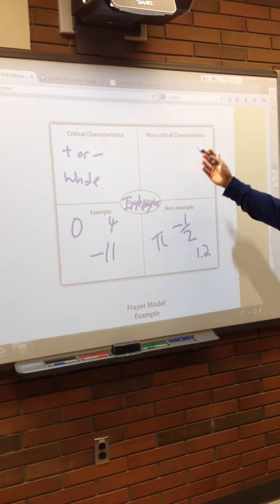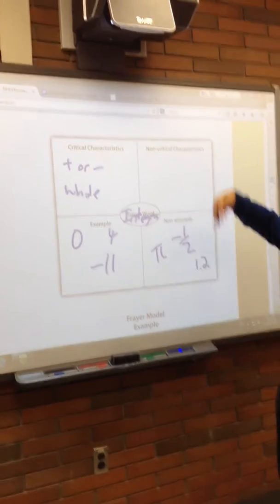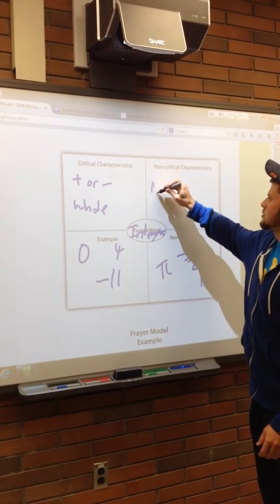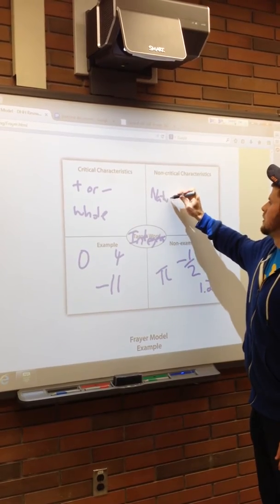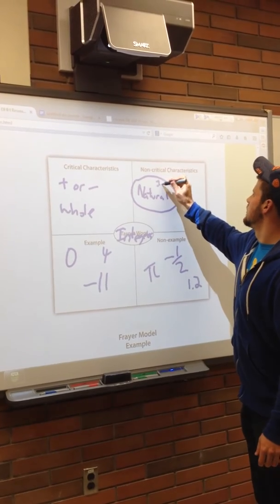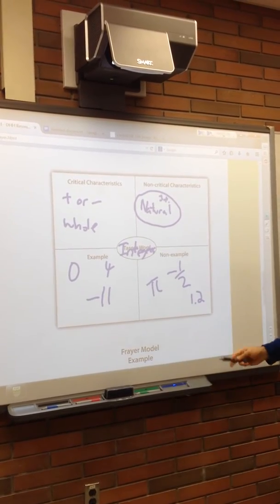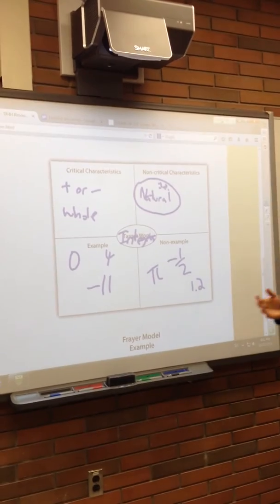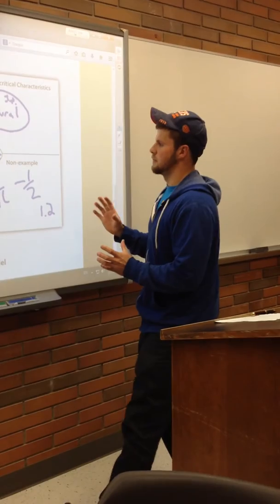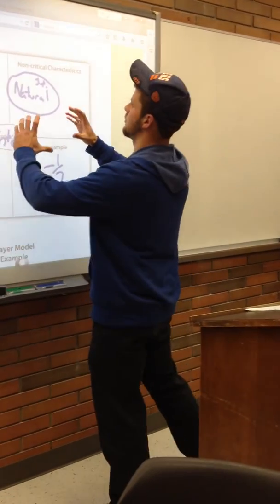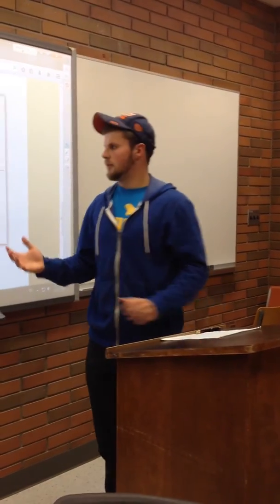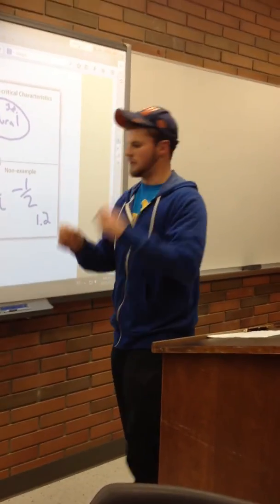And then they consider what are non-critical characteristics — things that we may know about them, but things that aren't essential to know. So the student may say, well, natural numbers go within integers — natural is inside integer — and so on. This is a fairly helpful method for students to bring all their information together, helping them to see the whole concept rather than just a bunch of broken-up pieces.